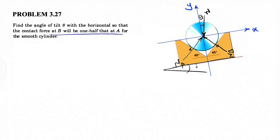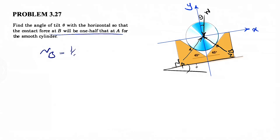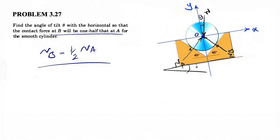From the last line of the question, we know that the force at B — which we call N-B, the normal force at B — is one half of N-A. That's an additional given, so that's another equation. We are in equilibrium, so we're going to use the equilibrium equations about the center of this cylinder, treating this as equilibrium of a particle.